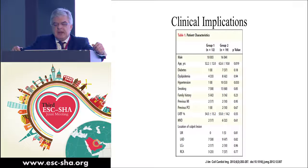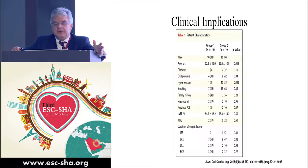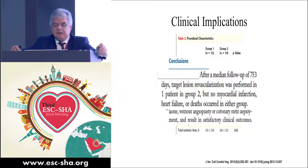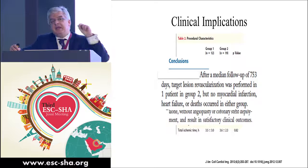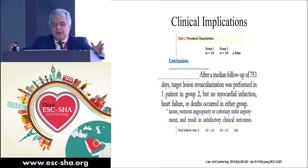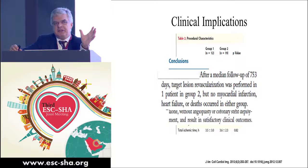They also used CT-angiography and divided patients into two groups. One group underwent just dual antiplatelet treatment. It's a small group of patients, and there are ongoing trials trying to look at this problem. What they demonstrated was that after a median follow-up of about two years, target lesion revascularization was performed in only one patient in group two — the group treated only with antiplatelet treatment. These are patients who by OCT showed only erosion of the plaque, no rupture, and no flow-limiting lesion. No myocardial infarction, heart failure, or deaths occurred in either group. This opens the way for a potential paradigm change in the treatment of acute coronary syndromes in this specific subset of patients.